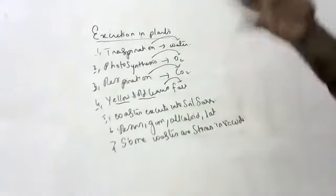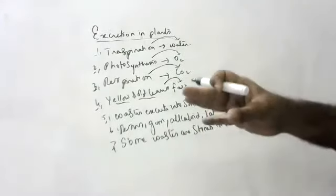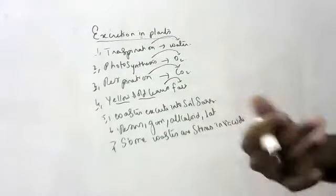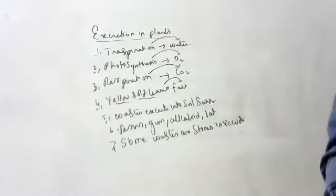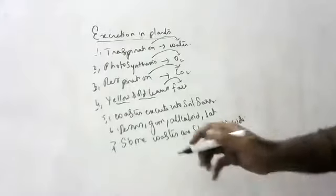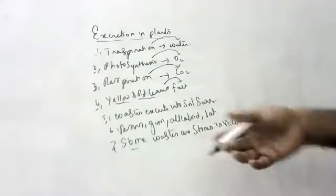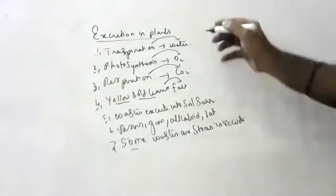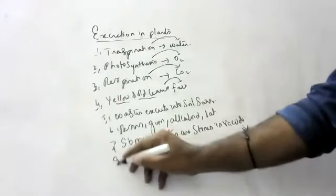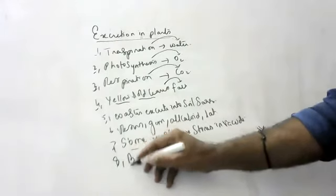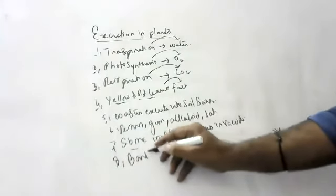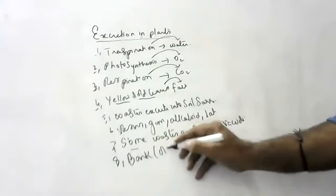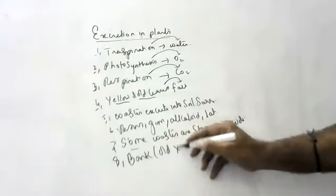All of the secretions, whatever is coming out of the plant, is considered as excretion. Some ways are stored in vacuoles also. And even resin is also a type of excretion, because the whole resin is all there.